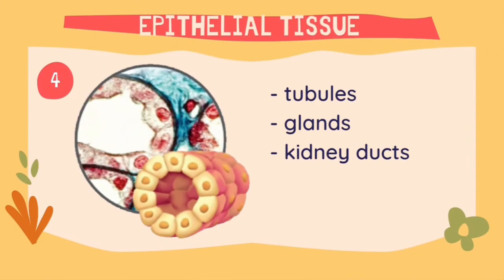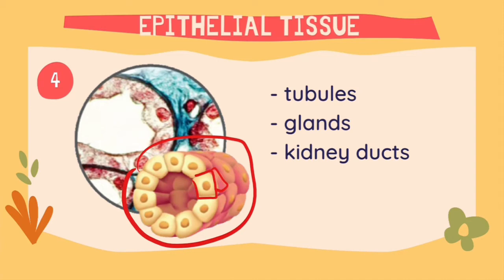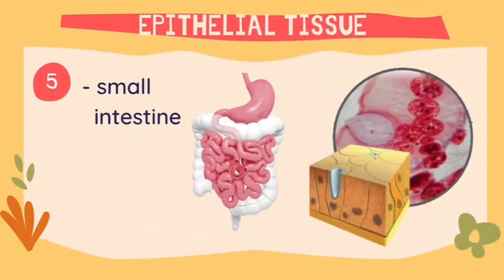The fourth structure of the epithelial tissue has a cuboidal shape that forms a hollow cylinder. This epithelial tissue can normally be found at the lines of tubules, glands, and kidney ducts. Last but not least, we have a structure that looks very similar to the one found at the surface of the trachea and the bronchus, but the only difference is that this structure does not have cilia. This structure can normally be found at the small intestine of the human body.